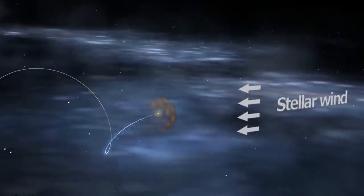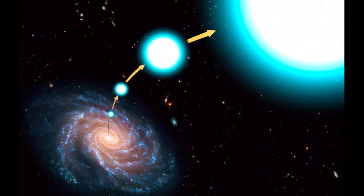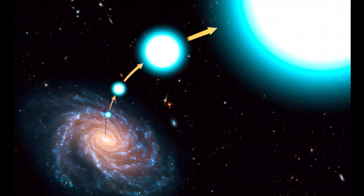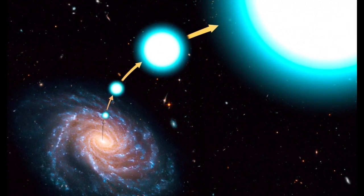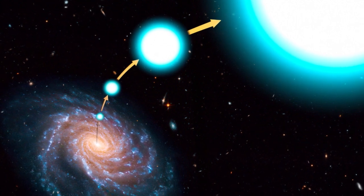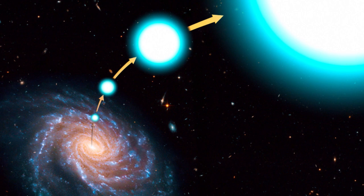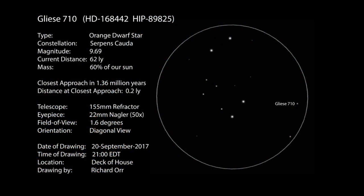All stars orbit something. Well, except for certain rogue stars astronomers are beginning to discover. Rogue stars, also known as intergalactic stars, are stars which have escaped the gravitational pulls of their home galaxies and travel independently through intergalactic voids. Yeah, they're pretty terrifying.